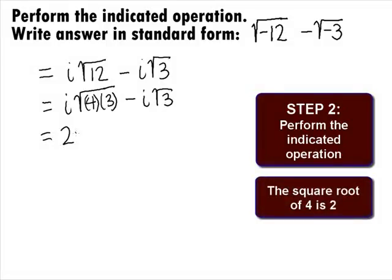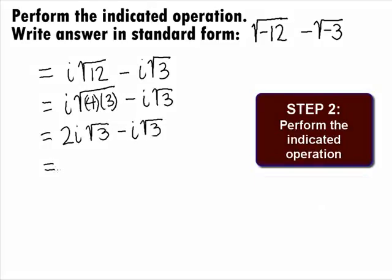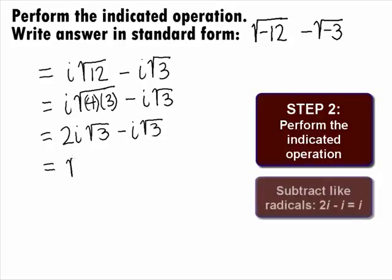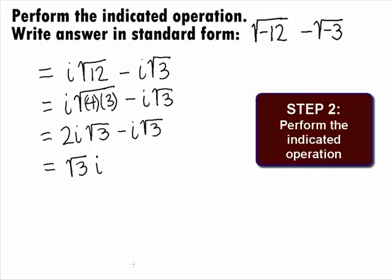Since the square root of 4 is 2, we can rewrite that as 2i square root of 3 minus i square root of 3. We now have like radicals and can combine them. Since 2i minus i equals i, we get square root of 3i.